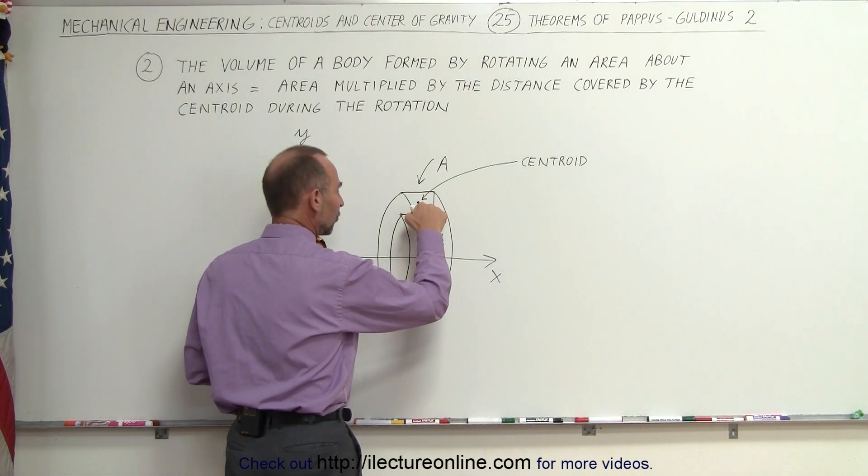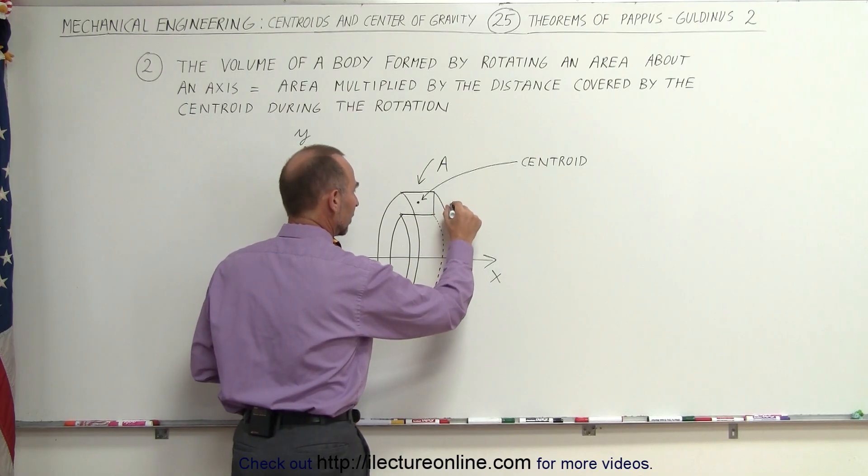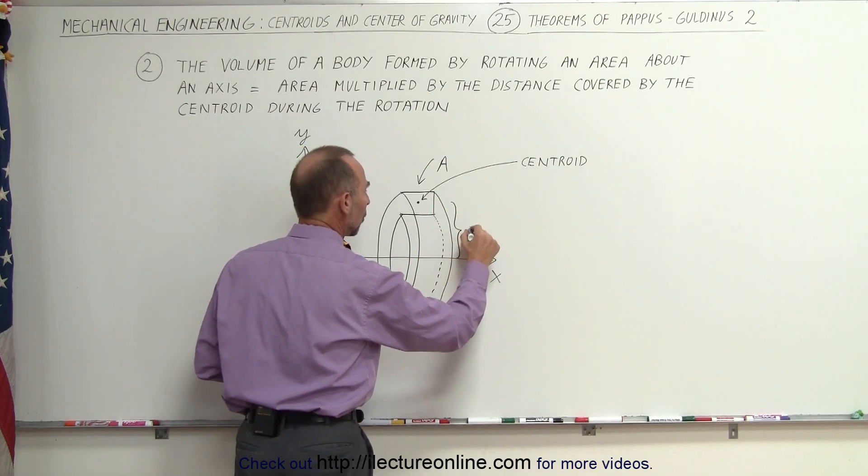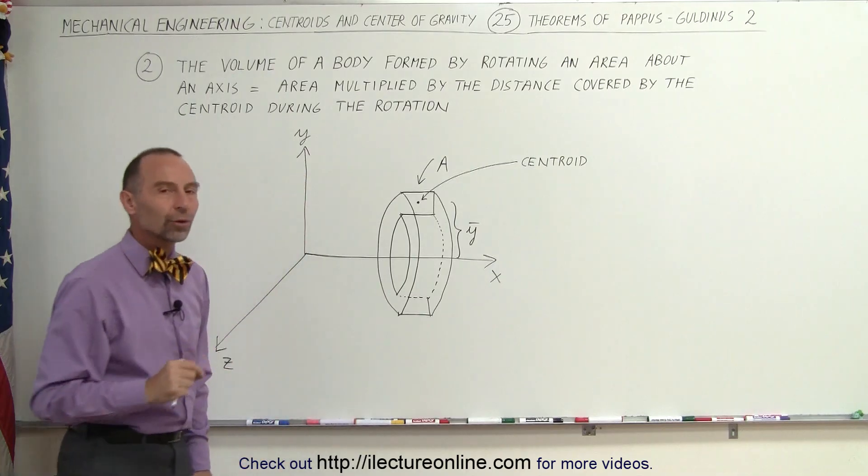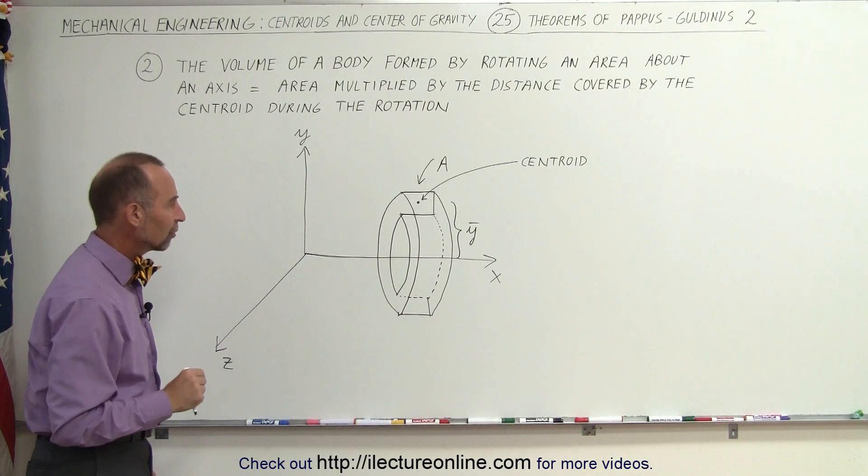The distance from the centroid to the axis of rotation, this distance right here, is the y coordinate of the centroid of the position or the coordinate of the centroid.